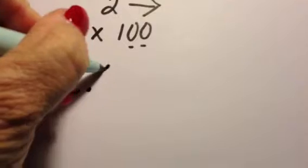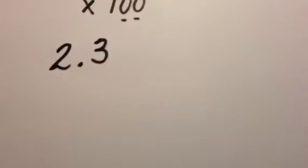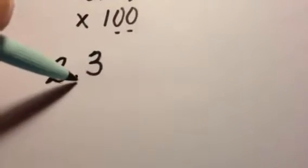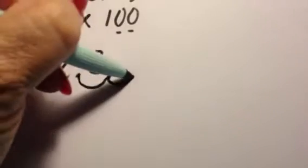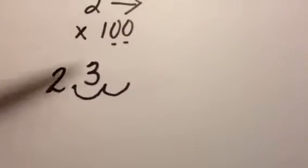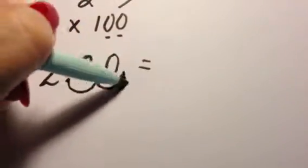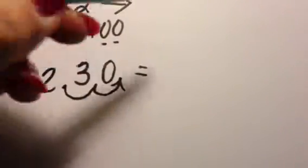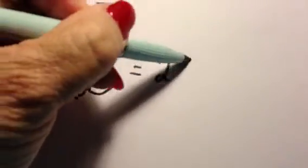Also, a number like 2.3, to change to a percent, two places to the right. Well notice I don't have two places, so then I would add a zero to accommodate it and my decimal point would end up over here, which would make it 230%.